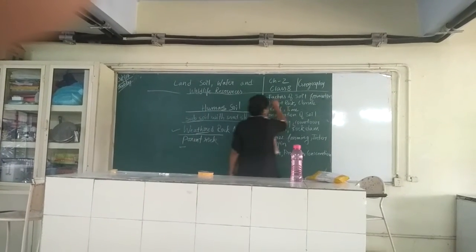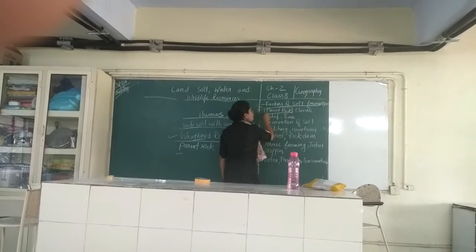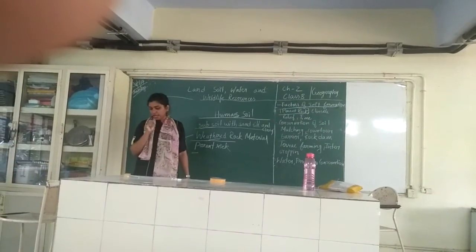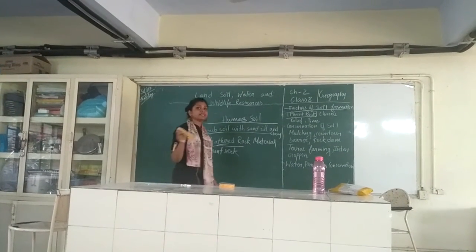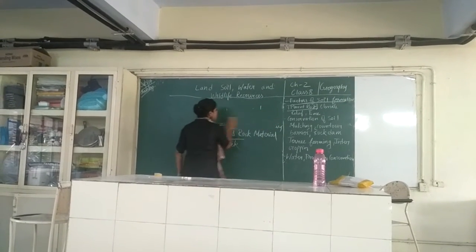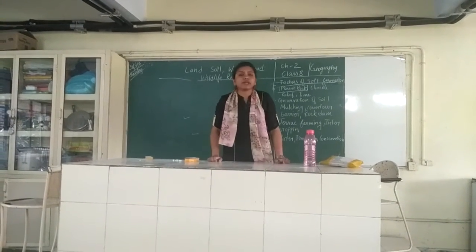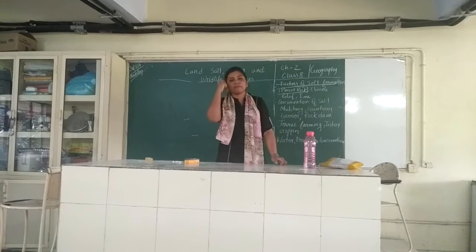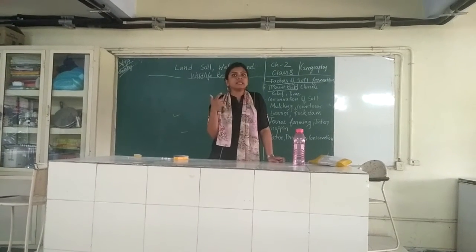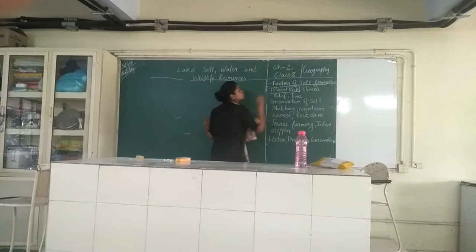Now I will explain the factors of soil formation. The first factor is the parent rock. It has to have a parent rock. It determines the color, texture, chemical properties, and mineral content of the soil. So if the parent rock is red in color, the soil will be red; if the parent rock is black, it will be a dark soil. The parent rock actually determines what kind of soil it will be.